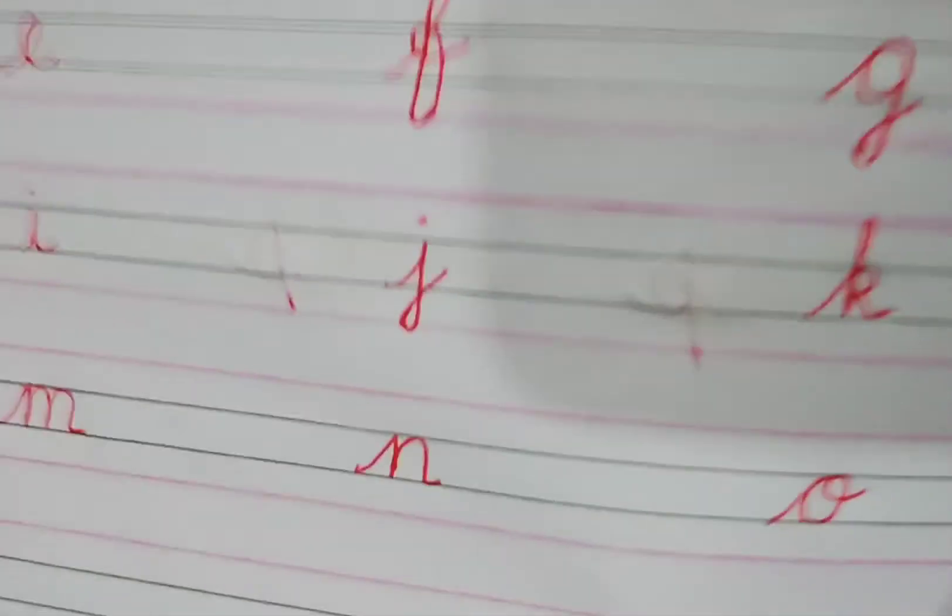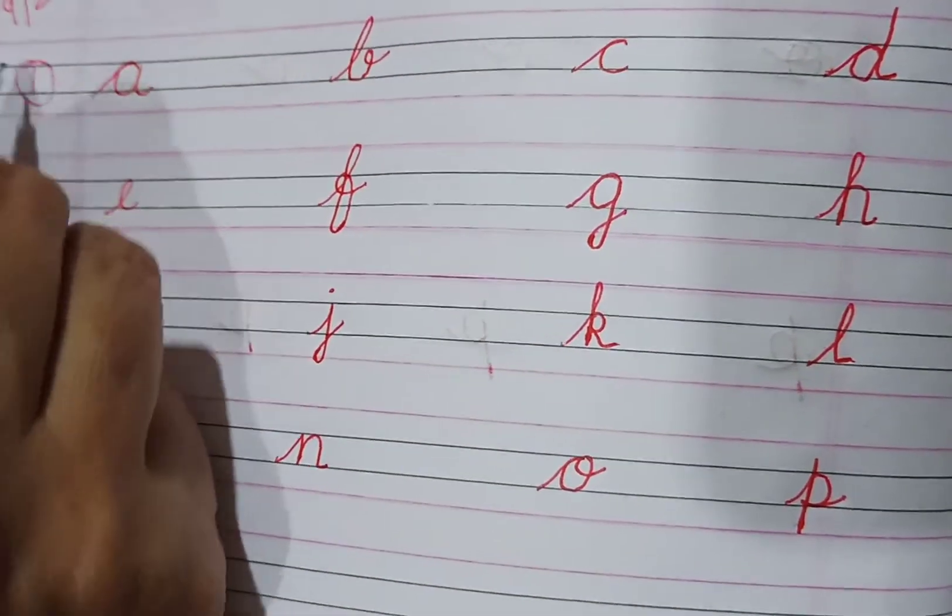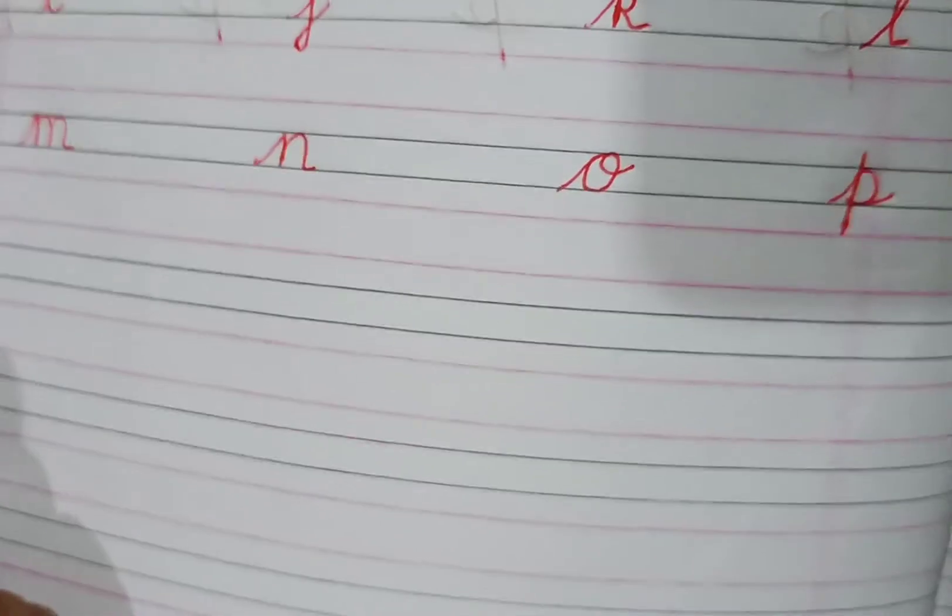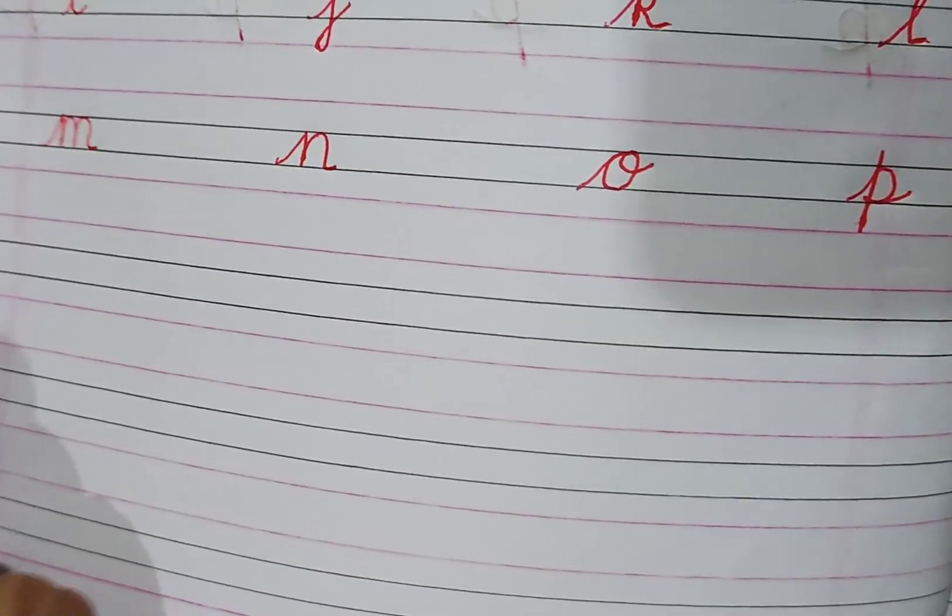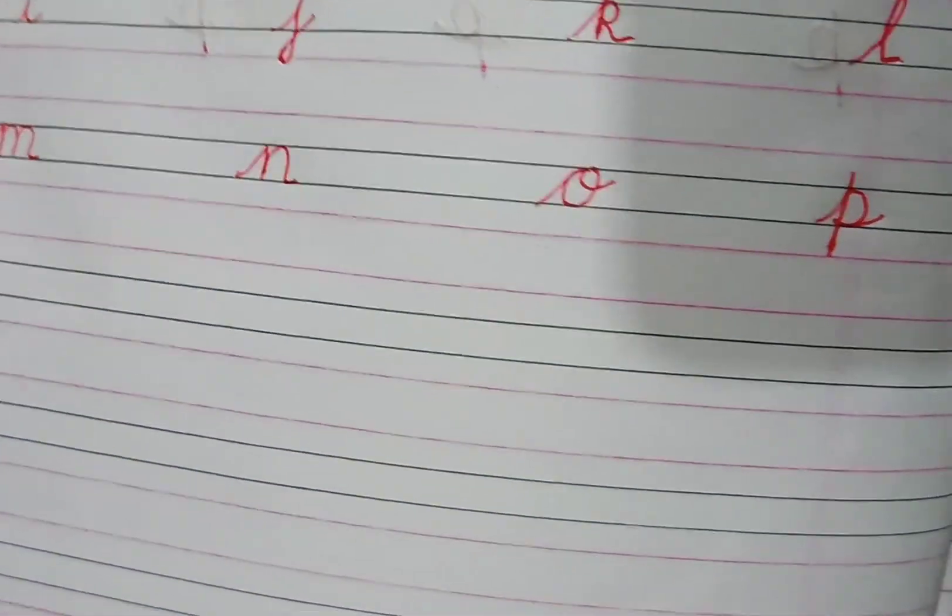So till p you write two times. Here one time, leave one line. Again, you practice down two times. Till p, only till p. Then after that, next page, I will make you practice q.